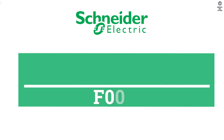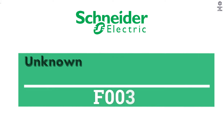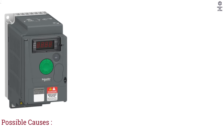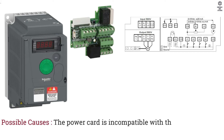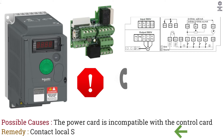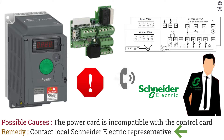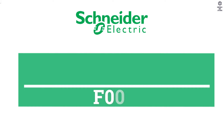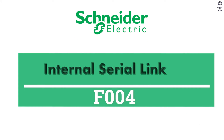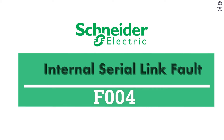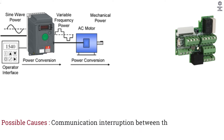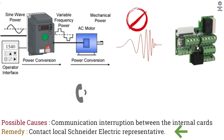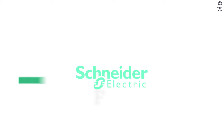F003 Unknown or Incompatible Power Board. Possible Causes: The Power Card is Incompatible with the Control Card. F004 Internal Serial Link Fault. Possible Causes: Communication Interruption between the Internal Cards.